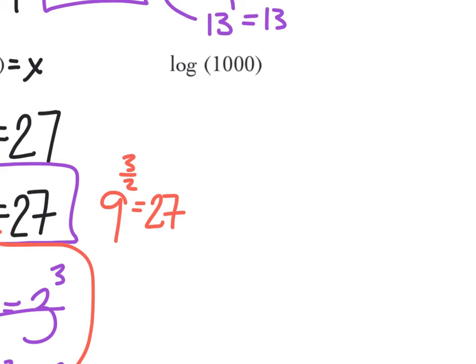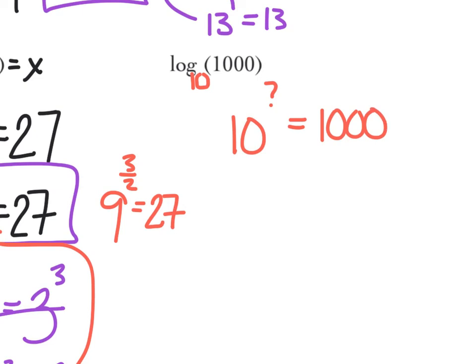All right, last one here. Log — notice I don't have a base, but in fact I do. Hopefully you caught it — this is a common log, so they're going to assume that you understand that base is a 10. So you're going to have to write your own base in sometimes. I'm going to say: what power of 10 is 1,000? I know 10 squared is 100, therefore 10 cubed is 1,000. So this equals 3, and in exponential form: 10 cubed equals 1,000.